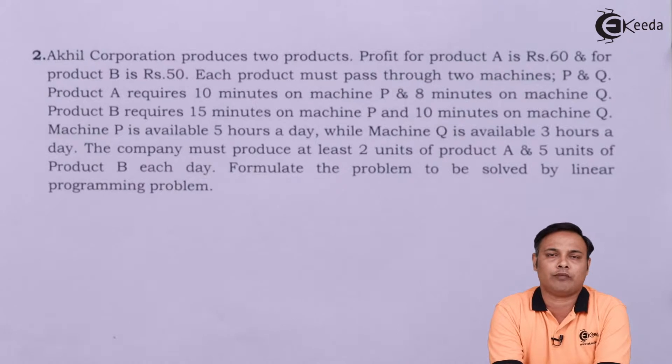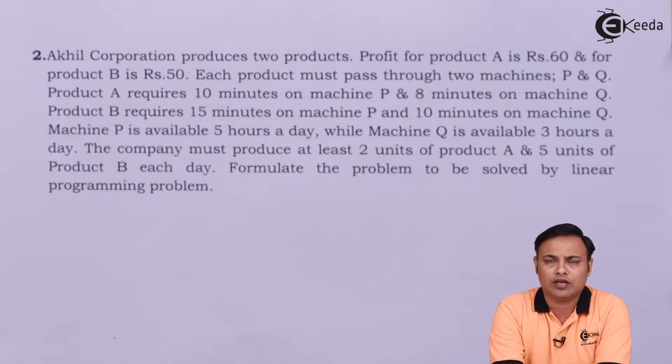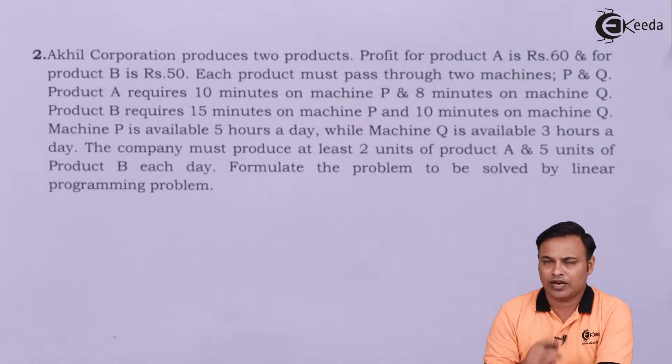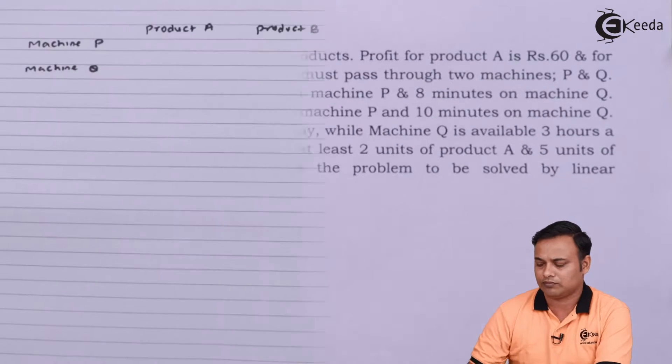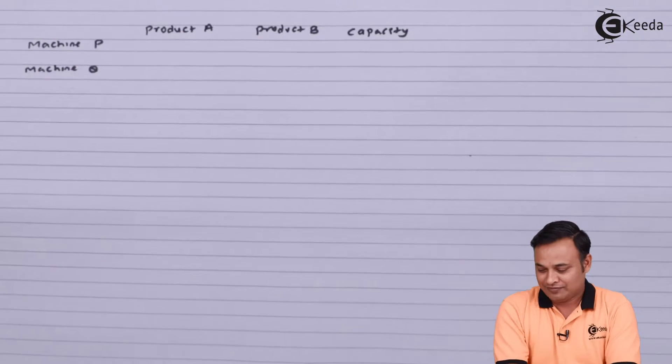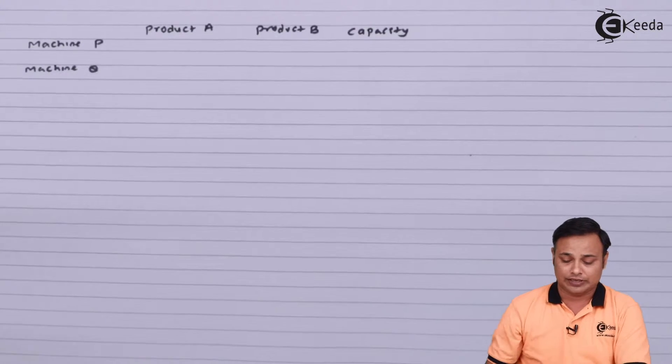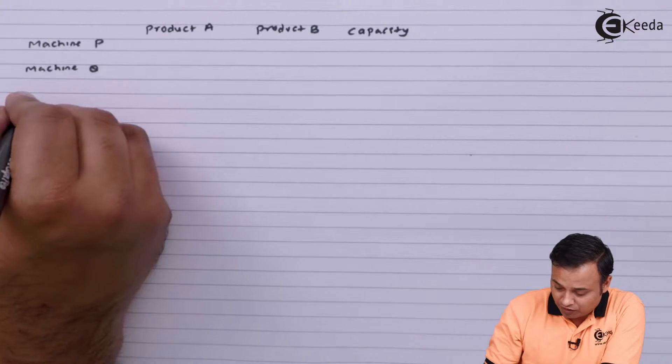So they are given us the complete information about 2 products A and B. We have products in column as usual, and we have 2 machines here: Machine P and machine Q. They are given us the day. Let's first tabulate the whole data as given in the problem. So we have 2 machines P and Q, we have 2 products and we have the capacity, and we will note down the profit here.